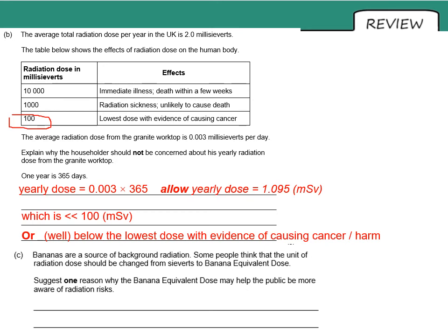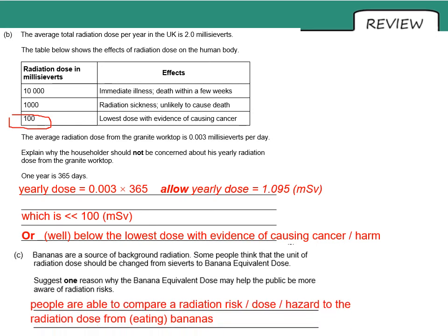Comparing perceived risk with actual risk — question C is about making things relatable to the general public by comparing the risk from the worktop to the risk of eating a banana. This was actually proposed at one point as a way of contextualising radiation doses.